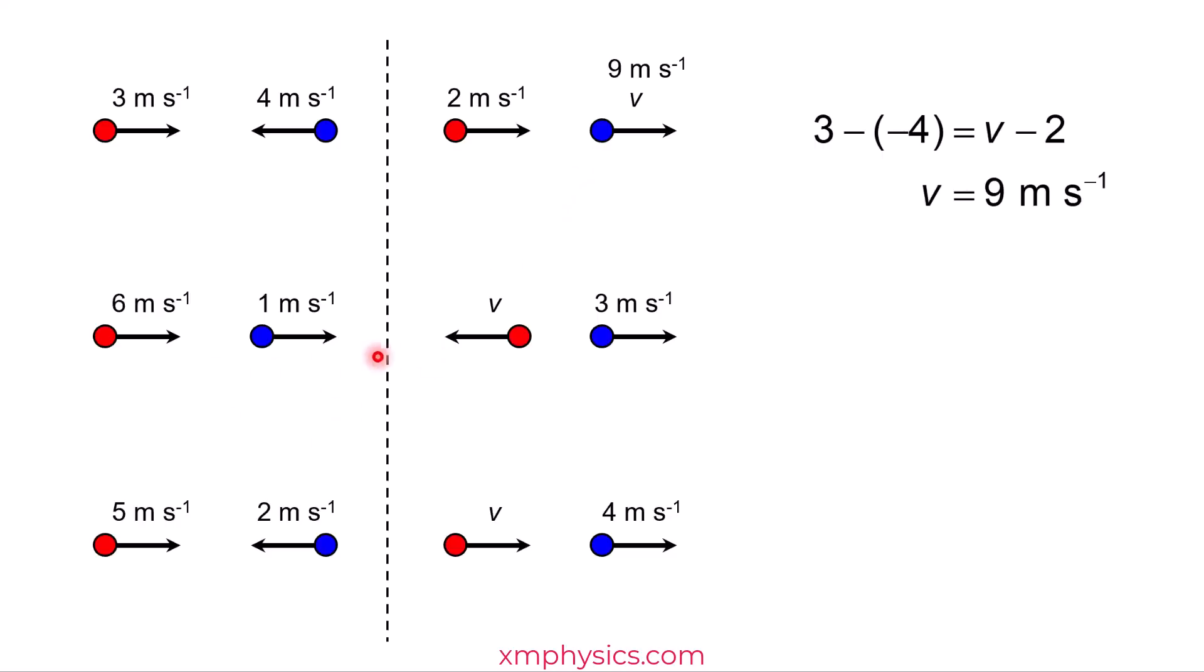Let's do another one here. So remember, this minus that is that minus this. So 6 minus 1 is 3 minus, careful, negative V, because we assume that this ball is going leftward after the collision. So do the math. Turns out V is 2 meters per second. So let me drop the number here. Do you see that before the collision, they approach each other at 5 meters per second? After the collision, they separate at 5 meters per second as well.